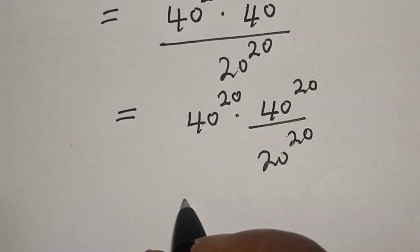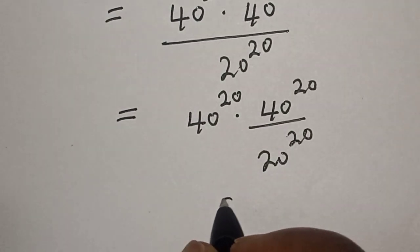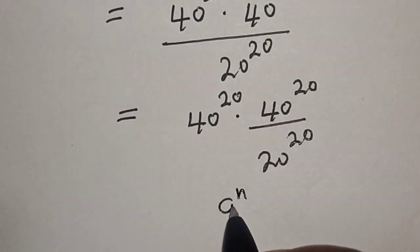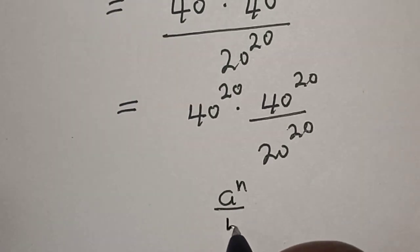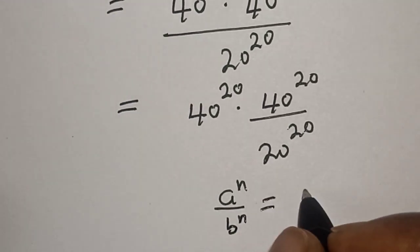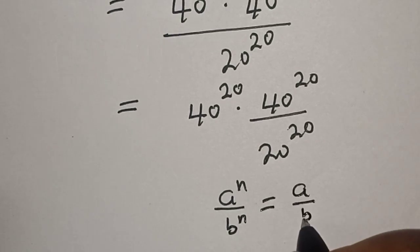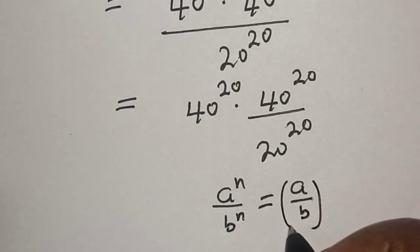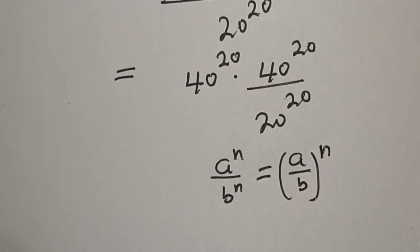Now also take note of this rule: a raised to power n divided by b to the power of n is equal to a over b, raised to the power of n.